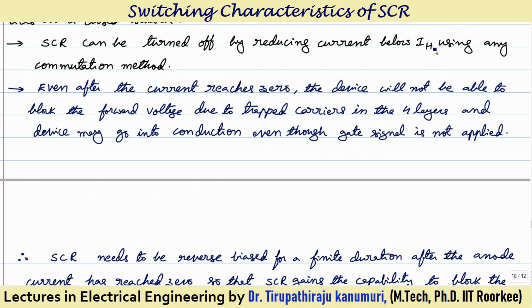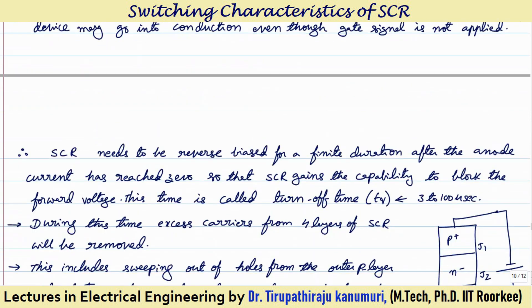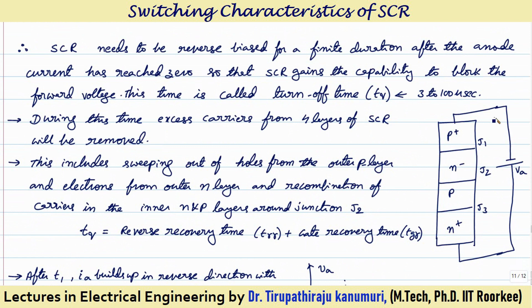Even when the current is less than holding current Ih, if you apply forward voltage again without a gate pulse it may turn on, because the trapped charges in the four layers mean the junctions J1, J2, J3 have not regained their blocking capacity. Therefore, the SCR needs to be reverse biased for a finite duration after the anode current reaches zero so that it can regain the capability to block the forward voltage. This turn-off time generally varies between 3 to 100 microseconds.